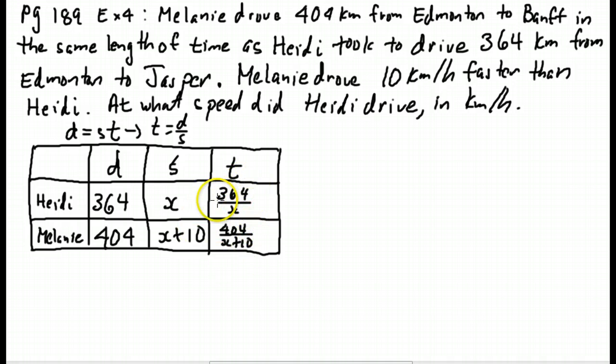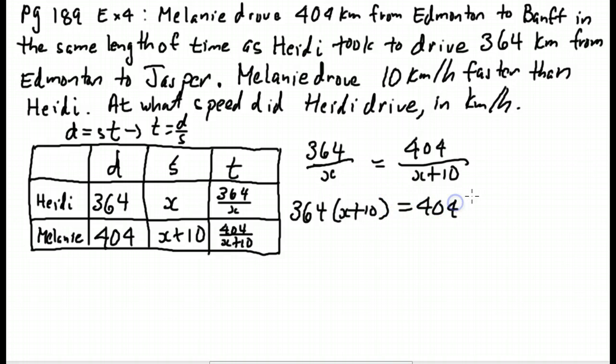So 364 over x and 404 over x plus 10. And what do we know about these times? In the last one, one was three hours longer. In this case, it's the same length of time. So we can just equate these. 364 over x is equal to 404 over x plus 10. We know that x can't be zero and x can't be negative 10. We're going to multiply through by x times x plus 10. Or really, in this case, it's cross-multiply. The 364 gets multiplied by the x plus 10. The 404 by the x.